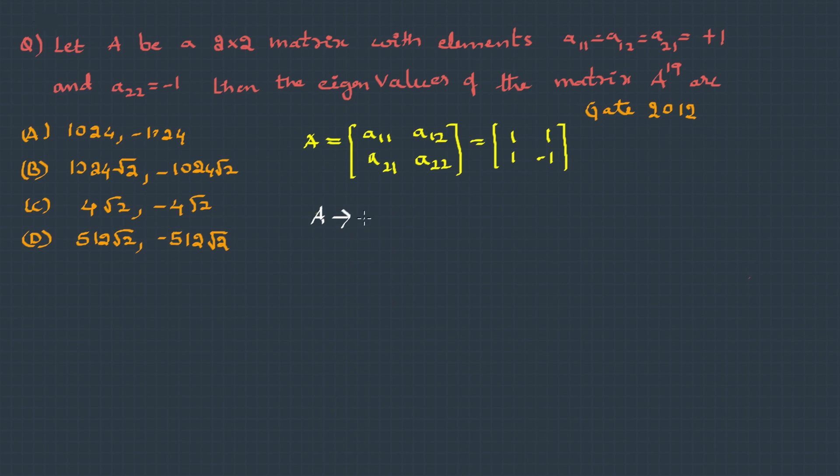We already know, if A has eigenvalue lambda, then A power 19 will have eigenvalue lambda power 19. So, what we will do is, we will find out the eigenvalue for A, then just we will take the power of 19. To find the eigenvalue, let's write the characteristic equation. By solving the characteristic equation, we get lambda as plus or minus root 2. Now, we need to find lambda power 19. Let's take the positive value first. Root 2 power 19, which is 2 power 9 into root 2, that's 512 root 2. On the same lines, for negative, it becomes minus 512 root 2. Therefore, the correct answer is option D.